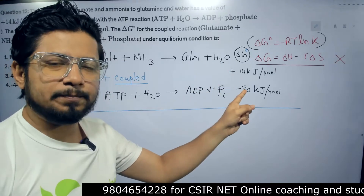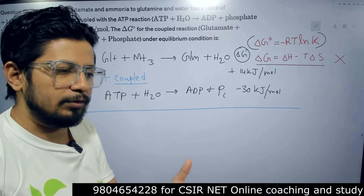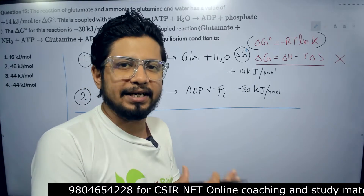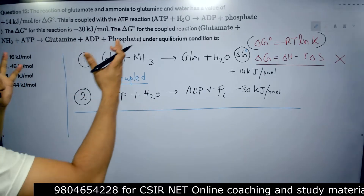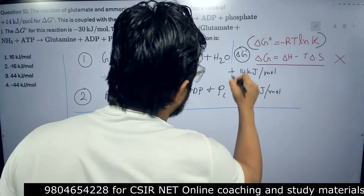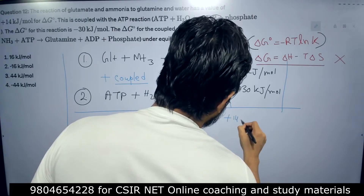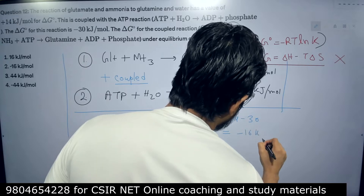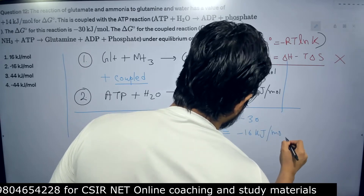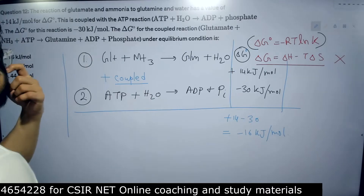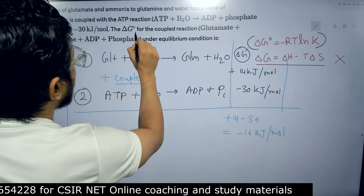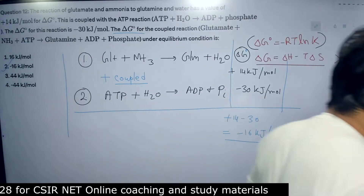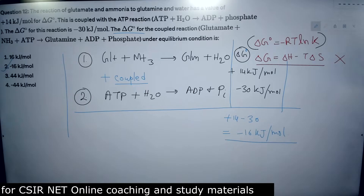When ΔG is positive, the reaction will not naturally go forward. We need extra energy, and ATP hydrolysis provides that help. So if we couple them together, the net ΔG value is: plus 14 plus (minus 30) = minus 16 kilojoule per mole. So the ΔG value for the coupled reaction is minus 16 kilojoule per mole. That is the answer.